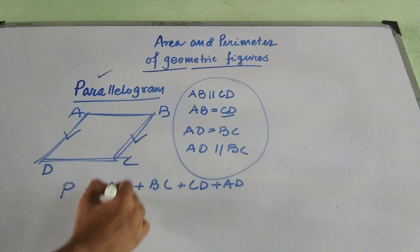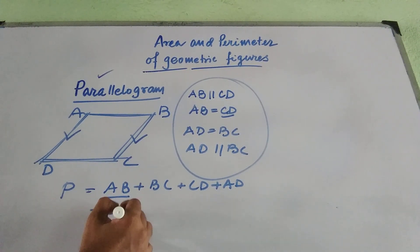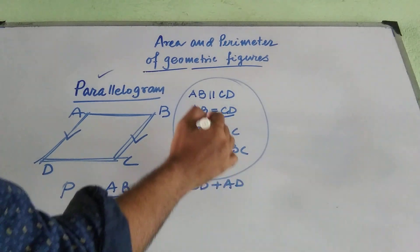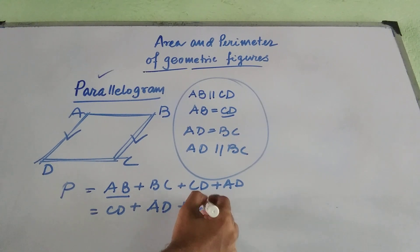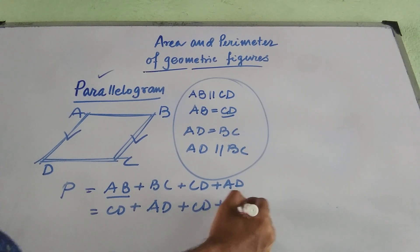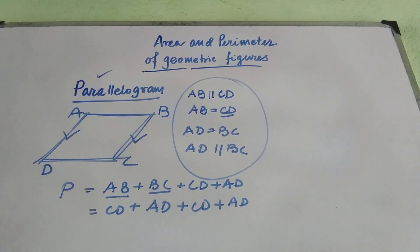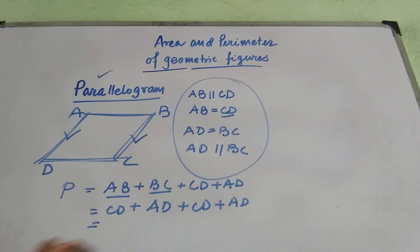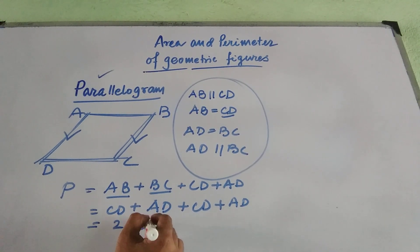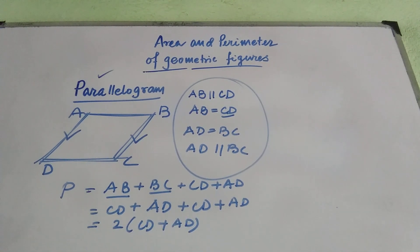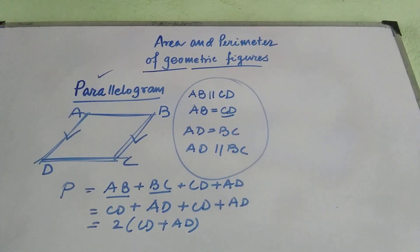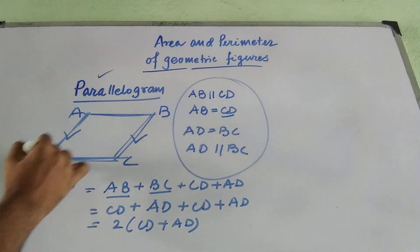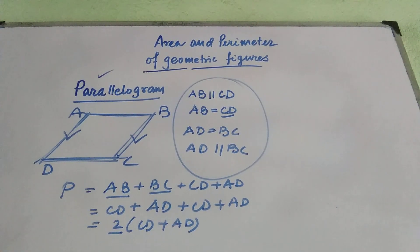Now, we know that AB equal to CD. So I can write it as CD. What is BC? BC is same as AD. So it comes to CD and AD. So it is very much evident, it is nothing but 2 into CD plus AD. So if I just sum up the AD and CD and multiply by 2, I am getting the perimeter of this particular parallelogram.